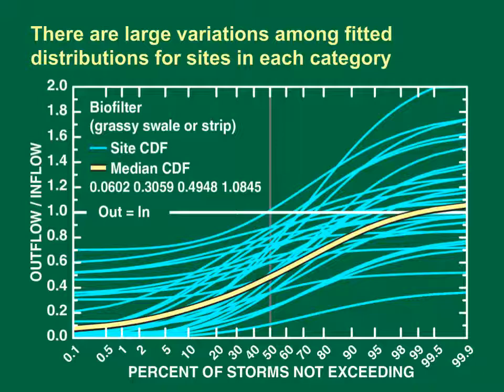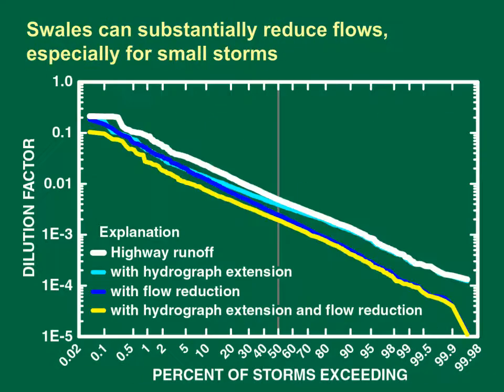Among these swales, the maximum values range from 0.27 to 2.75. The medians of the best-fit statistics are about 0.06 for the minimum, 0.31 for the lower bound of the most probable value, 0.49 for the upper bound of the most probable value, and 1.08 for the maximum. This is a slightly right-skewed trapezoidal distribution.